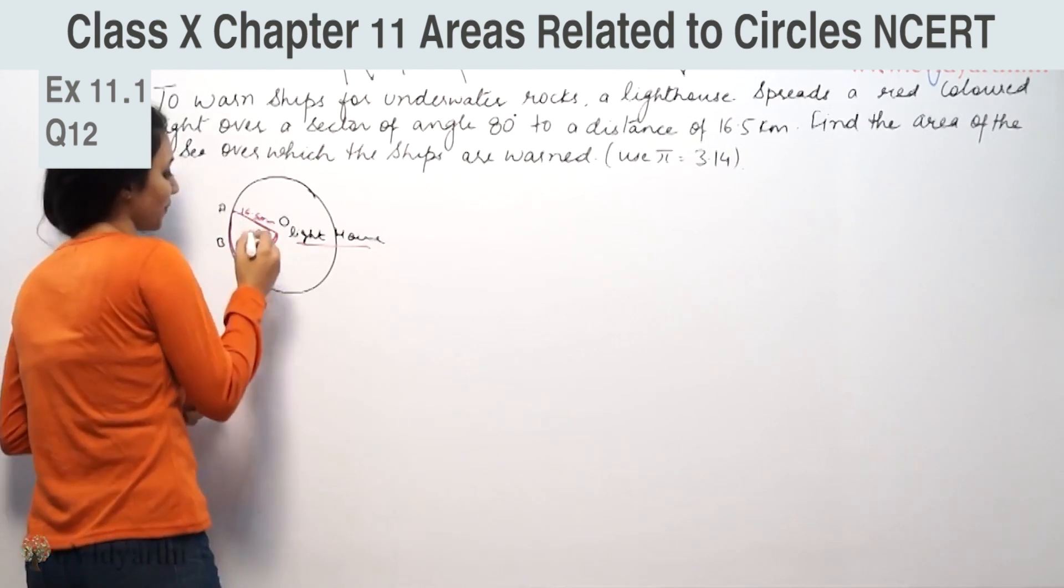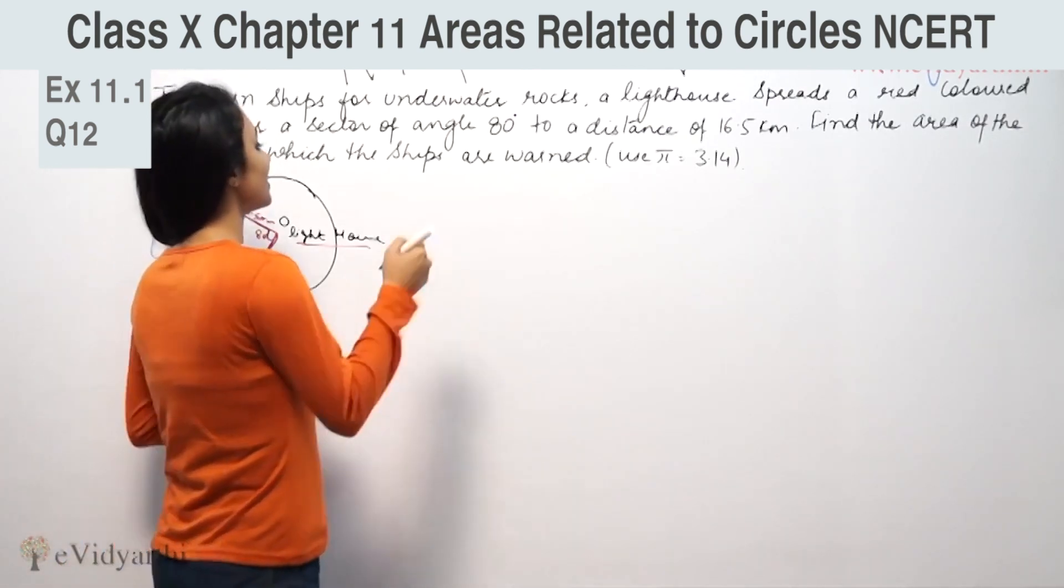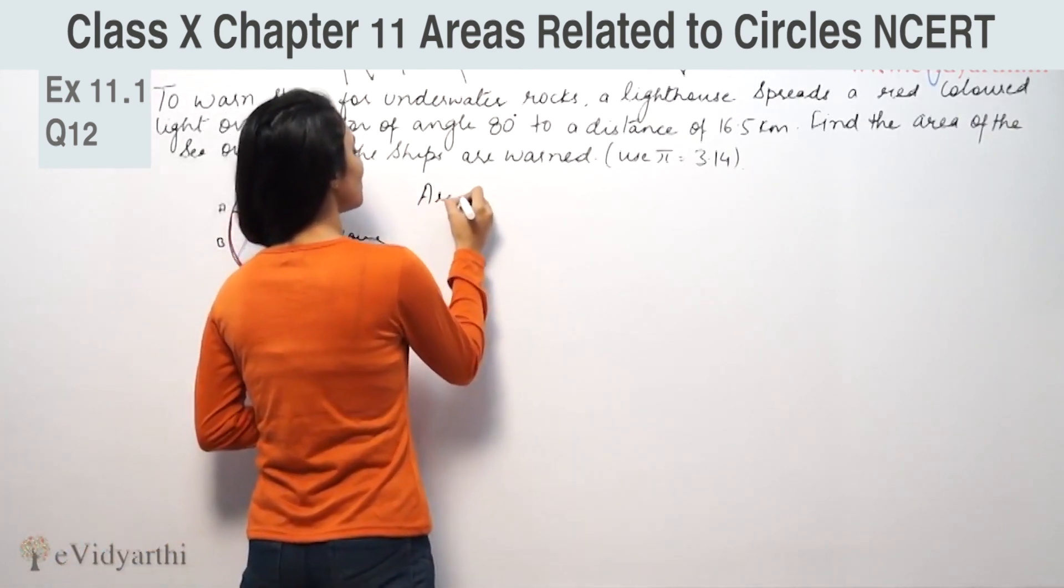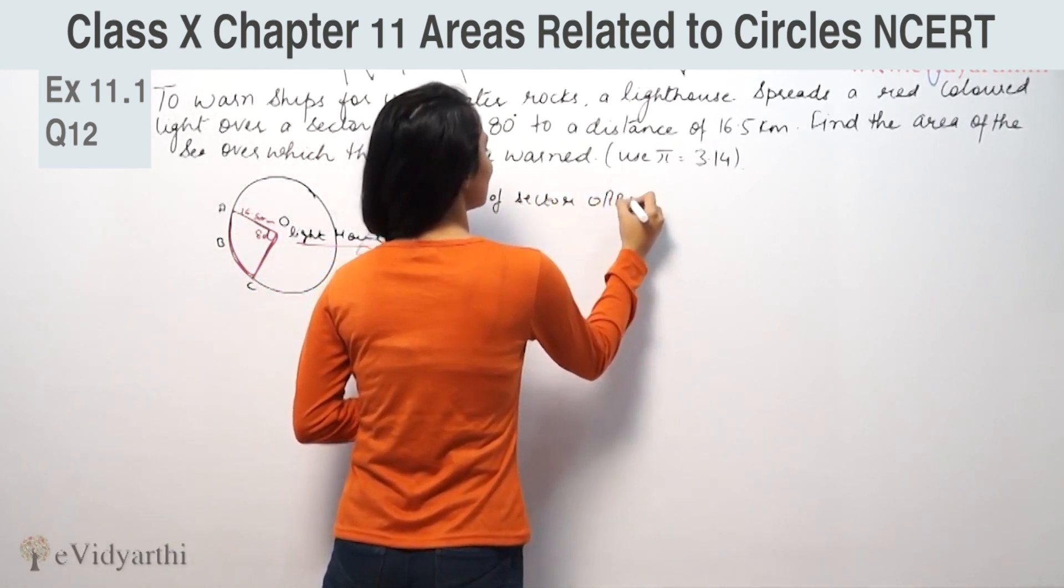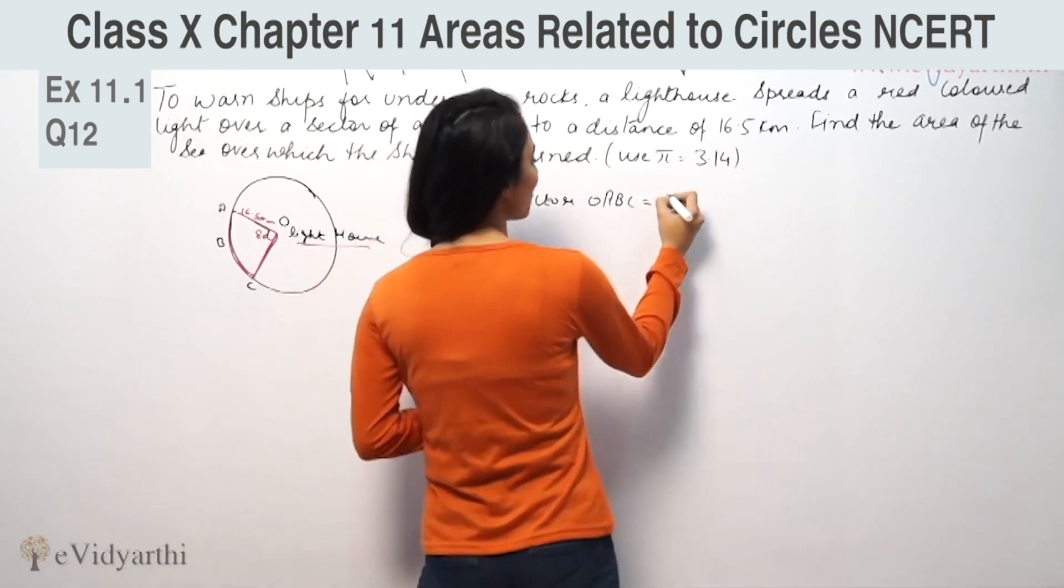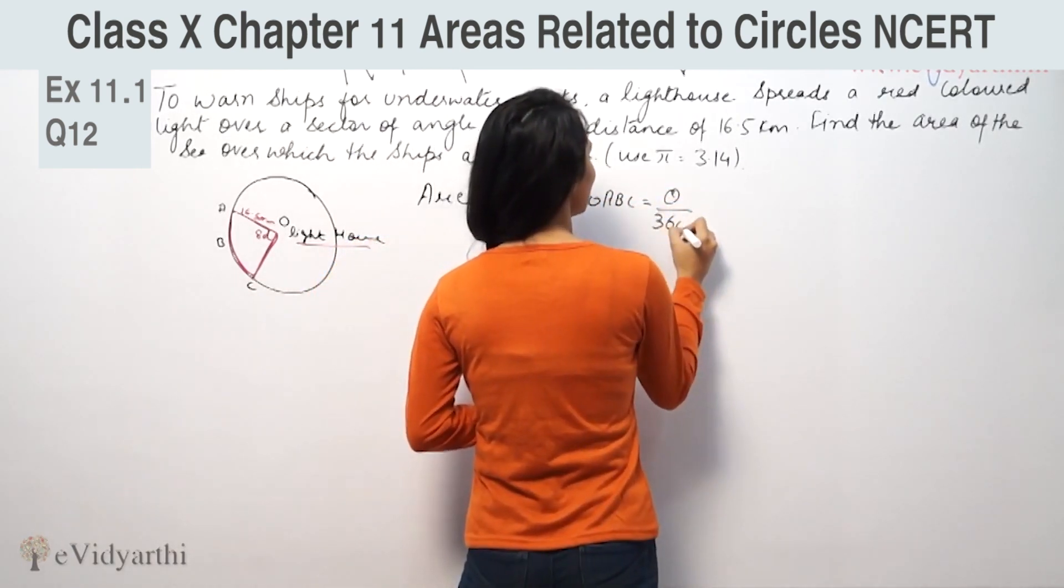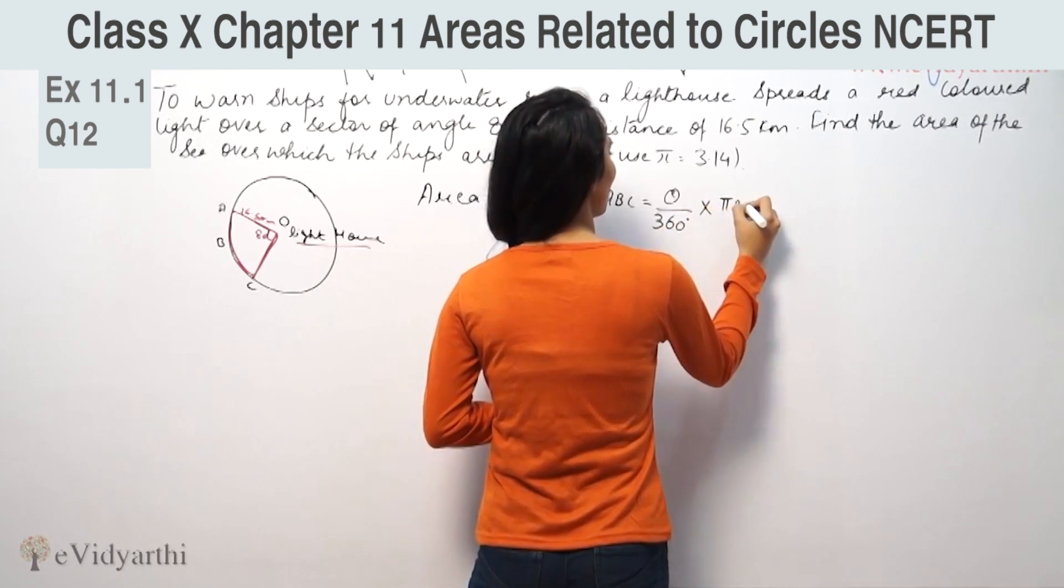We want to find the area of sector. So, the formula for area of sector OAB is: theta by 360 degrees into pi r squared.